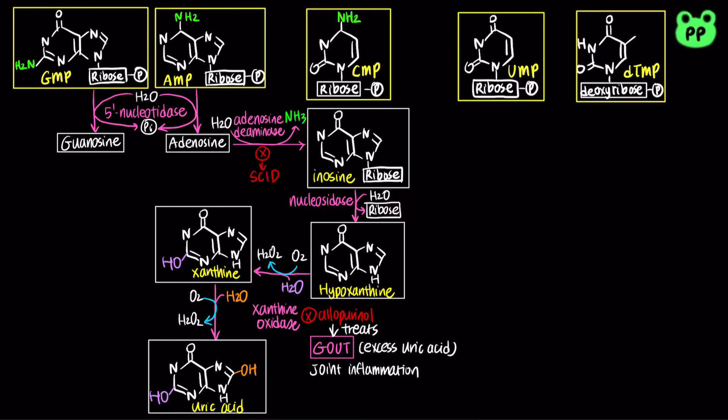On the other hand, guanosine undergoes similar degradation reactions but in different order. Guanosine is first degraded by nucleosidase to hydrolyze the sugar ribose, producing the nucleobase guanine.